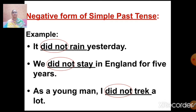So we use 'rain' as the first form of verb, not 'rained'. 'We did not stay in England for five years.' 'As a young man, I did not track a lot.' We are already using 'did' here, so we do not use 'tracked' — we use 'track'. I hope students, this is clear.